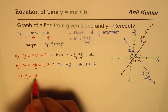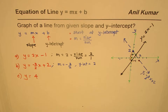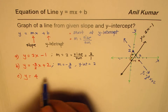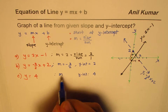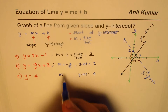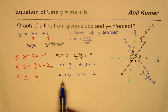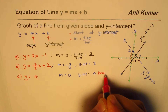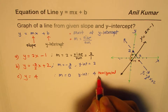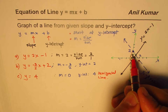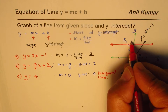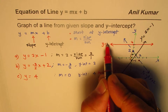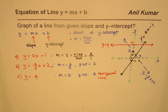Let's take Example C: y = 4. The y-intercept is clearly 4, but there is no x term, which means m = 0. A slope of 0 means we are working with a horizontal line. We mark the point at y = 4 and draw a horizontal line through it. That line is y = 4.